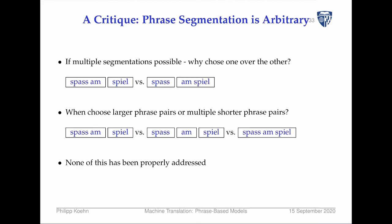Here's a critique of phrase-based models: the segmentation we do in phrases is completely arbitrary. If multiple segmentations are possible, why do we choose one over the other? How this is done during inference time we'll talk about in the next lecture, but in modeling time we just consider all of them.